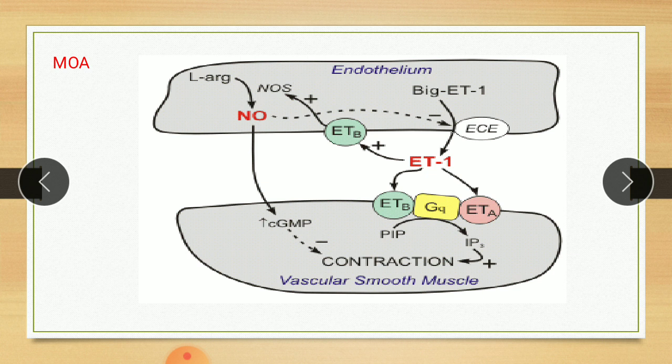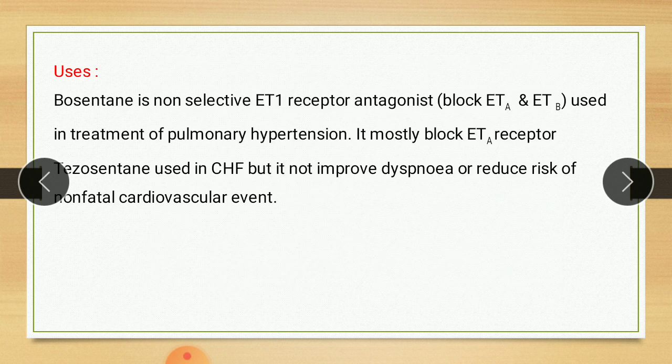The target of these two drugs is the endothelin receptor. Bosentan is a non-selective ET-1 receptor antagonist, meaning it blocks both ETA and ETB, and is used in the treatment of pulmonary hypertension, mostly blocking the ETA receptor. Tezosentan is used in congestive heart failure, but it does not improve dyspnea or reduce the risk of non-fatal cardiovascular events.